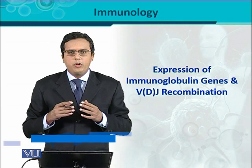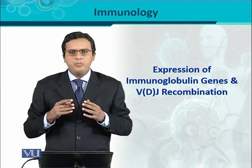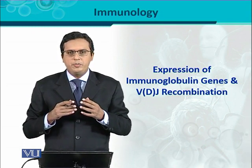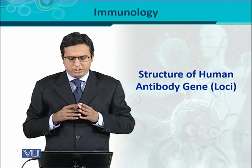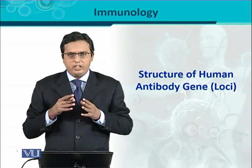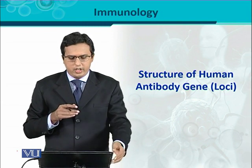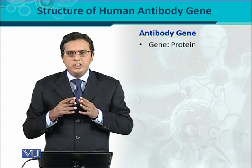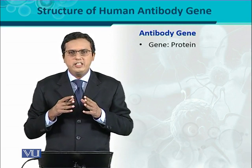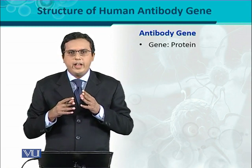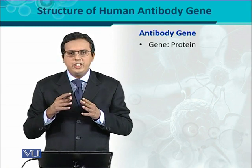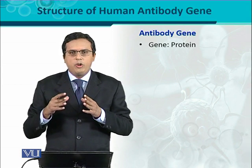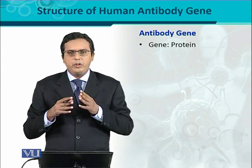Immunoglobulins are very important molecules which are produced as a response of immune activation by immune cells. The structure of the human antibody gene — that means the loci or locus — involves human immunoglobulin genes. Immunoglobulins are proteins, and proteins are usually encoded by genes according to the one gene, one protein theory, where one gene encodes for one protein.